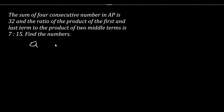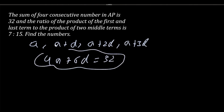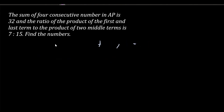If you take the AP as a, a+d, a+2d, and a+3d, then adding these terms gives 4a + 6d = 32. You cannot get the value of either a or d separately, so it results in very complicated working. Therefore, we are going to modify this approach.